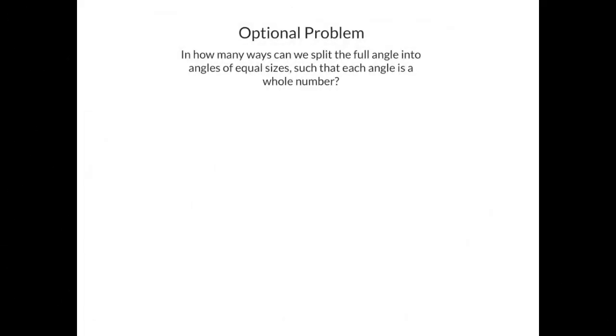Here is the optional problem. In how many ways can we split the full angle into angles of equal sizes, such that each angle is a whole number? For example, we can split the full angle of 360 degrees into 4 equal parts, and each part measures 90 degrees. 90 is a whole number, so this configuration works. So the question is, how many such configurations do we have?